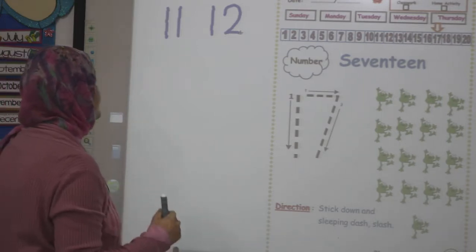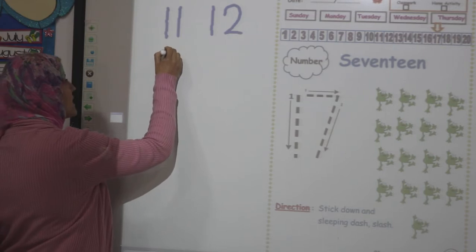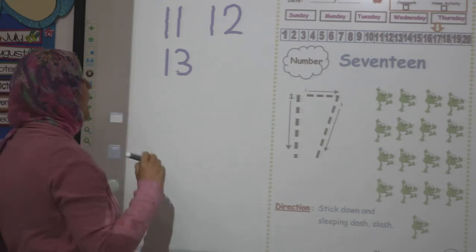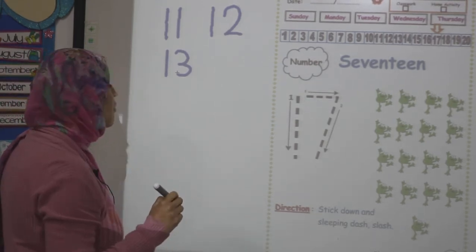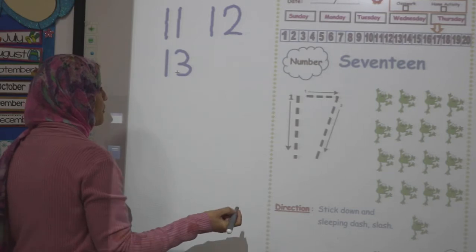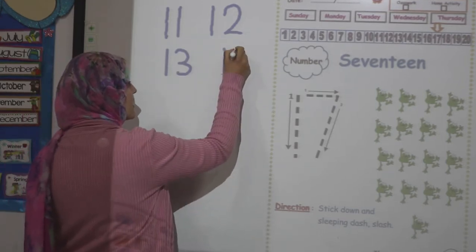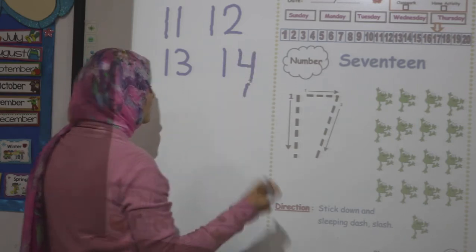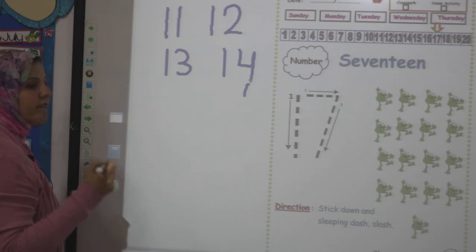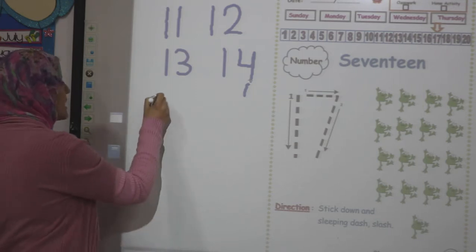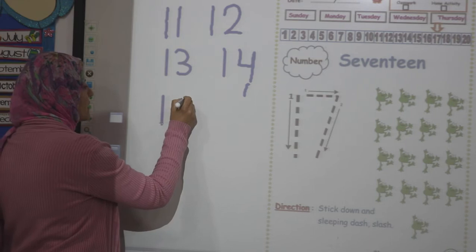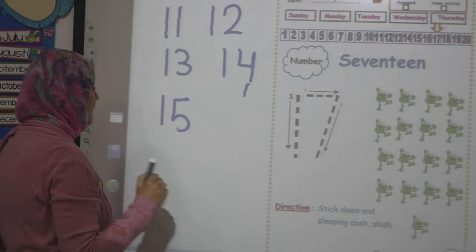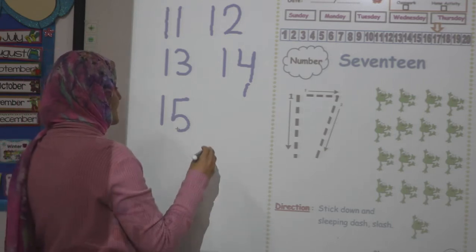What comes after 12? 13. How do we write number 13? Stick down, semicircle and semicircle. What comes after 13? 14. How do we write number 14? Stick down, stick down, sleeping dash and stick down. What comes after 14? 15. How do we write number 15? Stick down, sleeping dash and stick down in semicircle.